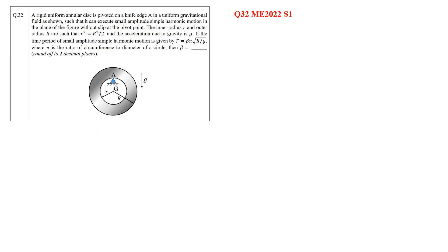Hello everyone, today we will be solving one question from kinematics of machines applying some concepts of mechanical vibrations. The question asks about a rigid uniform annular disc, shown in the figure, pivoted on a knife edge in a uniform gravitational field G, such that it can execute small amplitude simple harmonic motion without slip at the pivot. The inner radius r and outer radius R are such that R² = r²/2. We have to find beta, where the time period T = β·π·√(r/g).